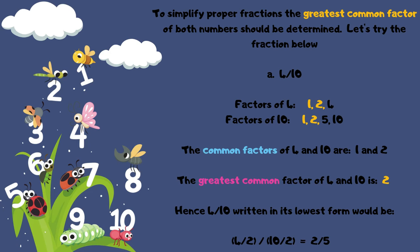Factors of 4 are 1, 2, and 4. Factors of 10 are 1, 2, 5, and 10. The common factors of 4 and 10 are 1 and 2. The greatest common factor of 4 and 10 is 2. Hence, 4 over 10 written to its lowest form would be 4 divided by 2, over 10 divided by 2, to give you 2 over 5.